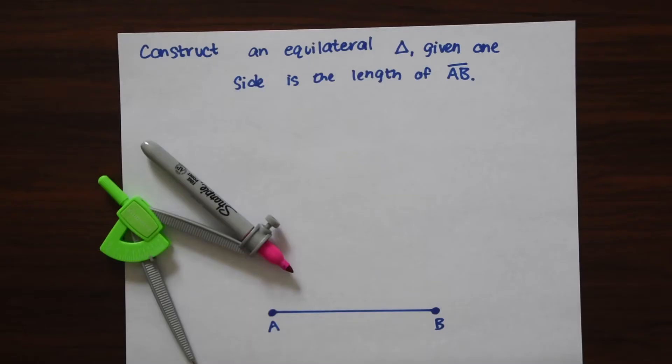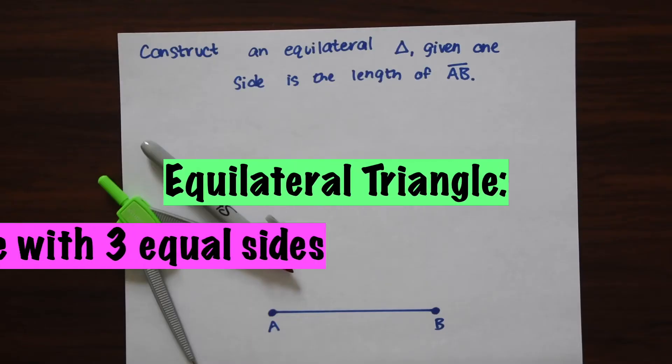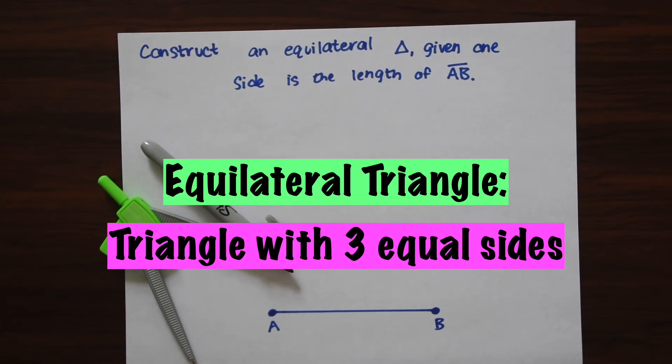So just a reminder about what an equilateral triangle is. It's a triangle with three equal sides. If we're given one of its lengths we should be able to find the other two pretty easily.